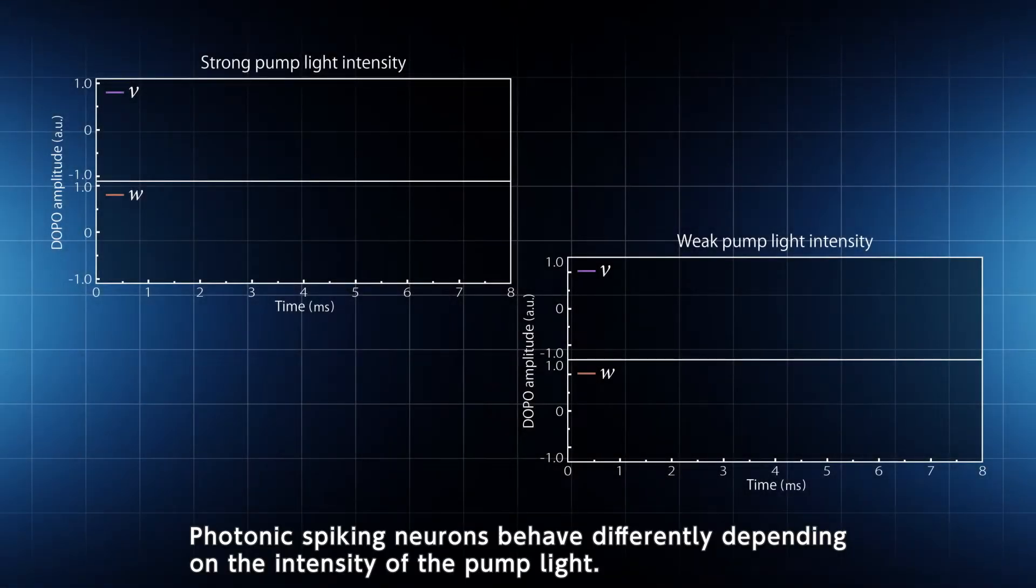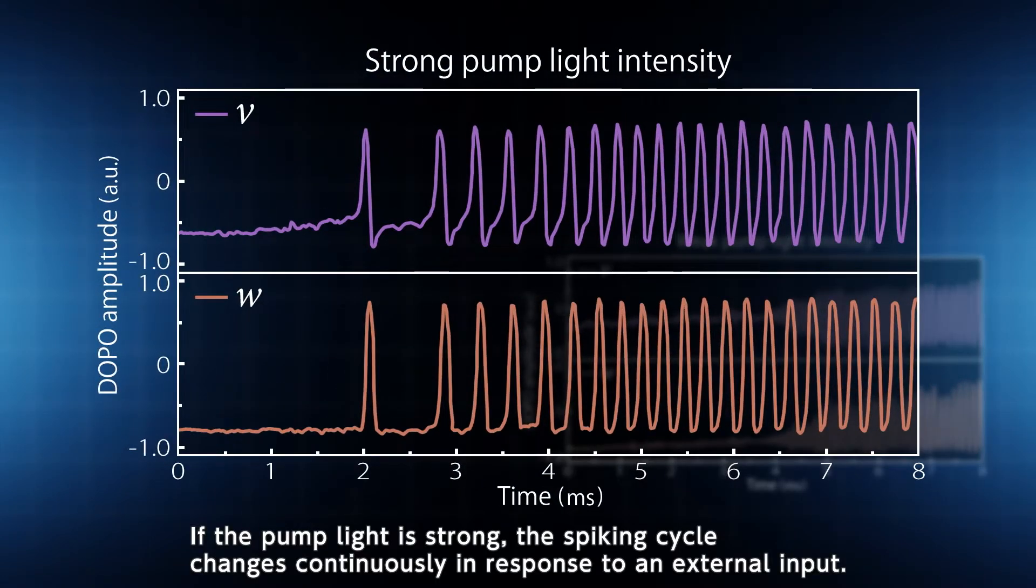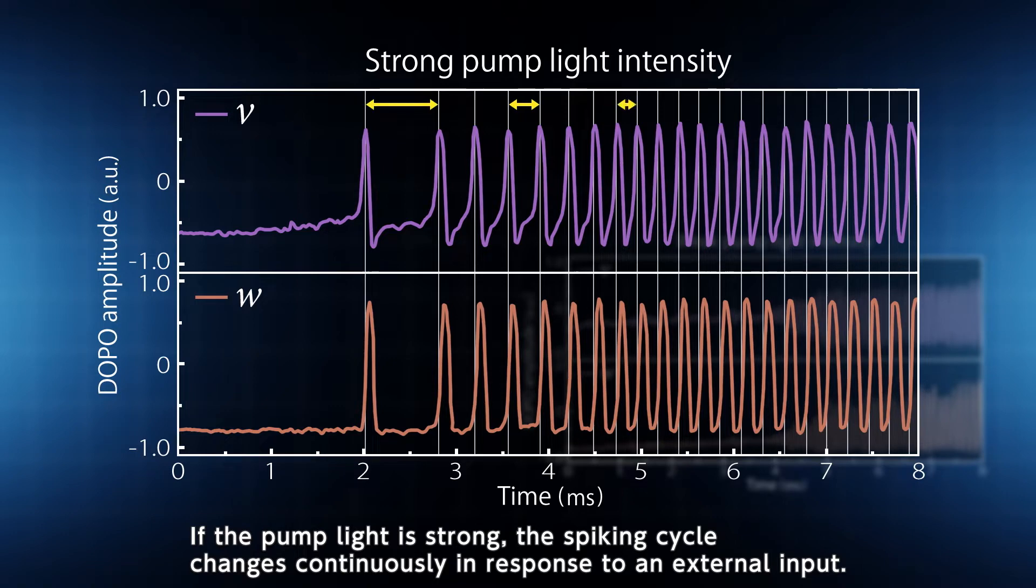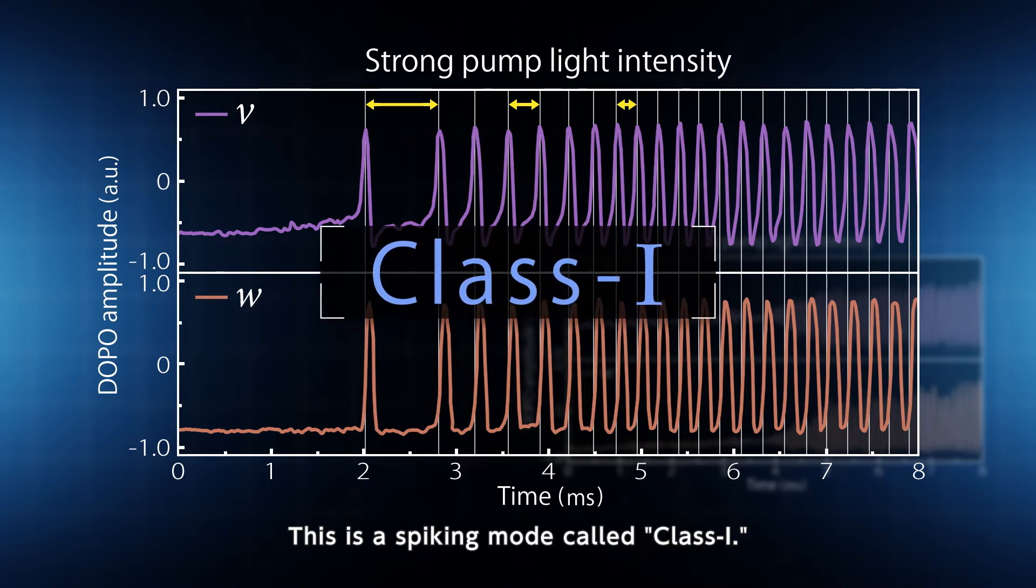Photonic spiking neurons behave differently depending on the intensity of the pump light. If the pump light is strong, the spiking cycle changes continuously in response to an external input. This is a spiking mode called class 1.